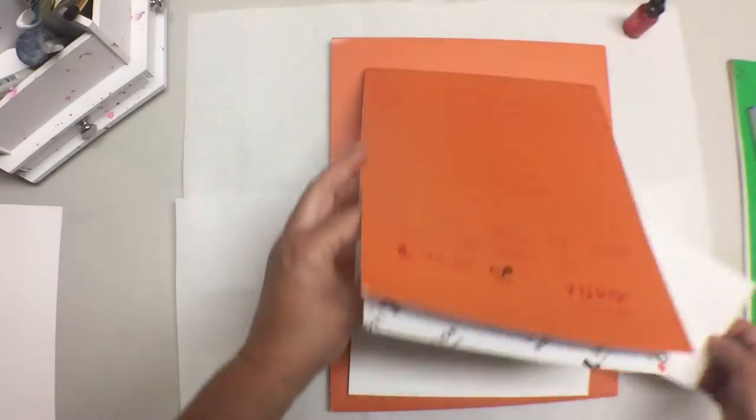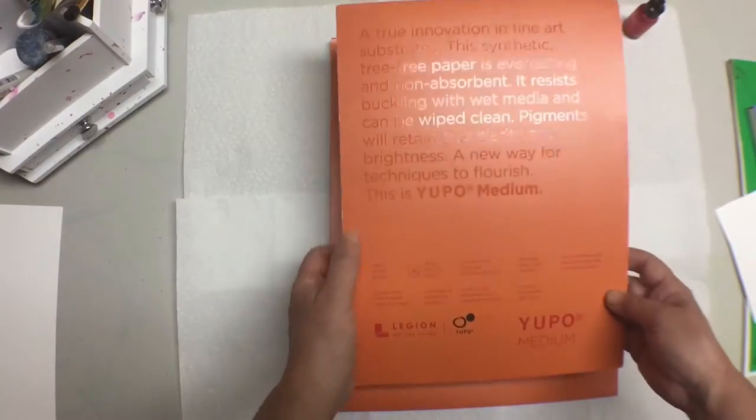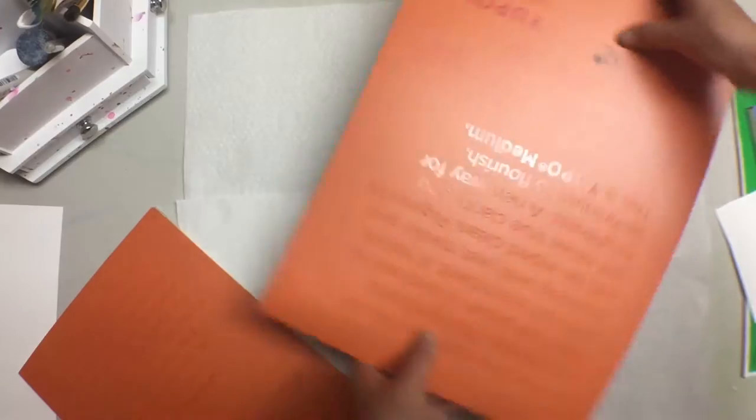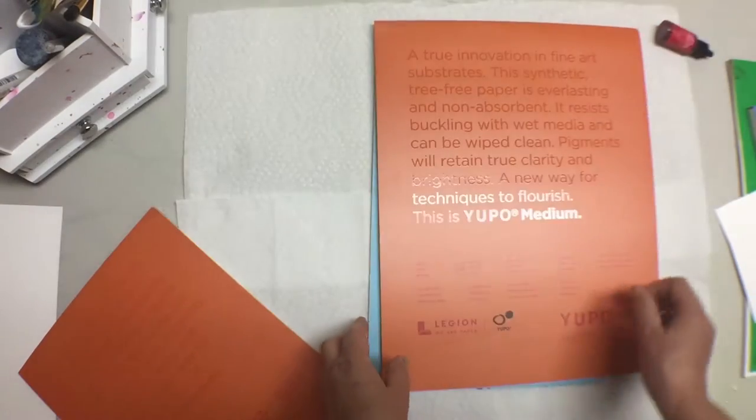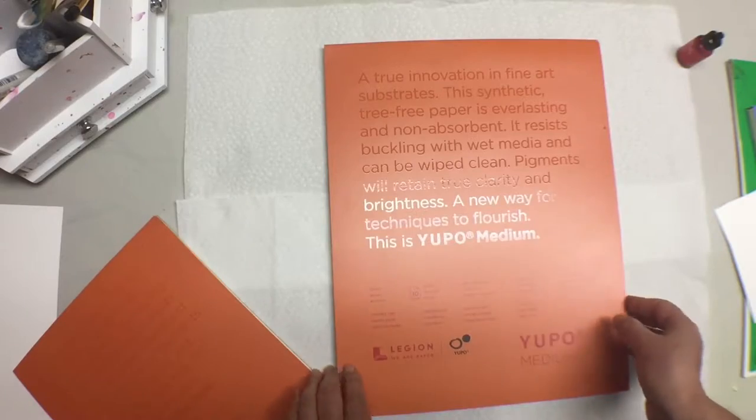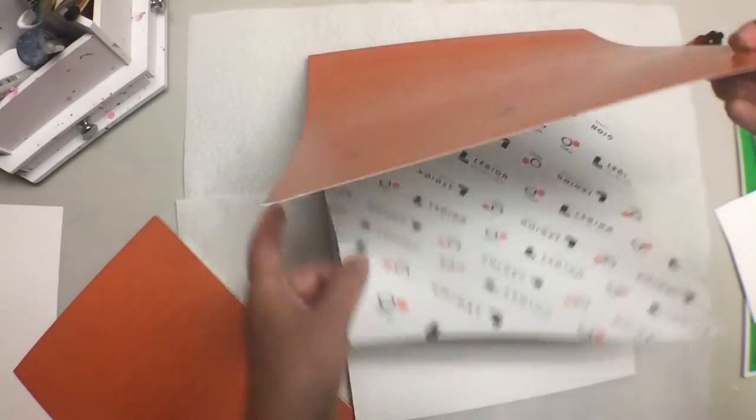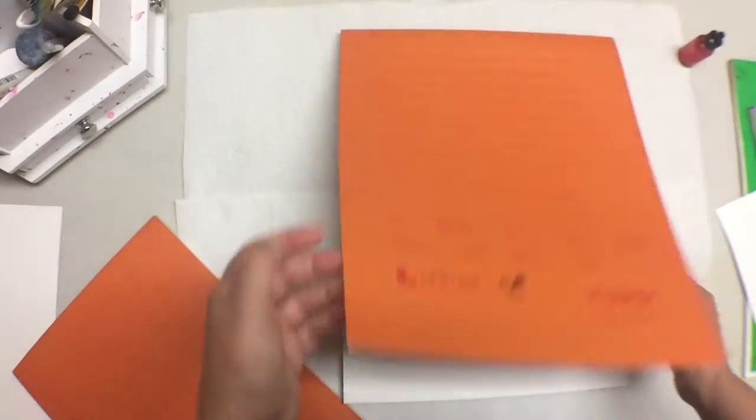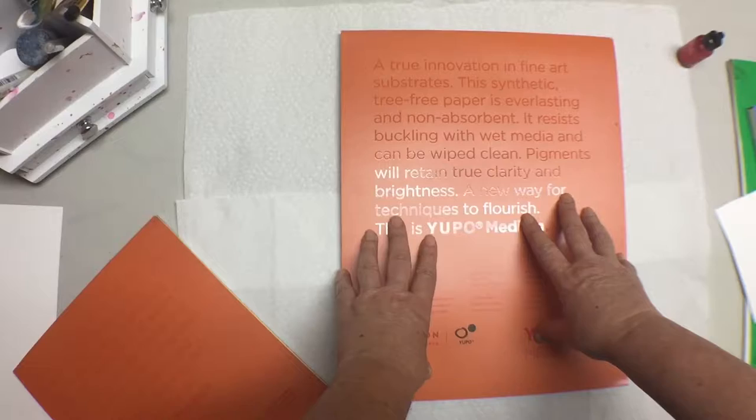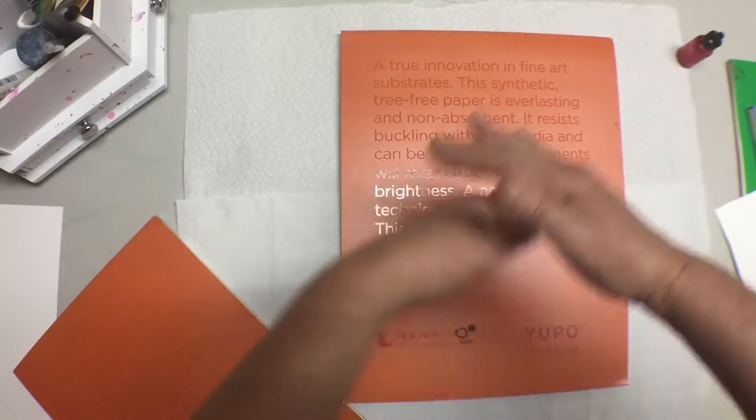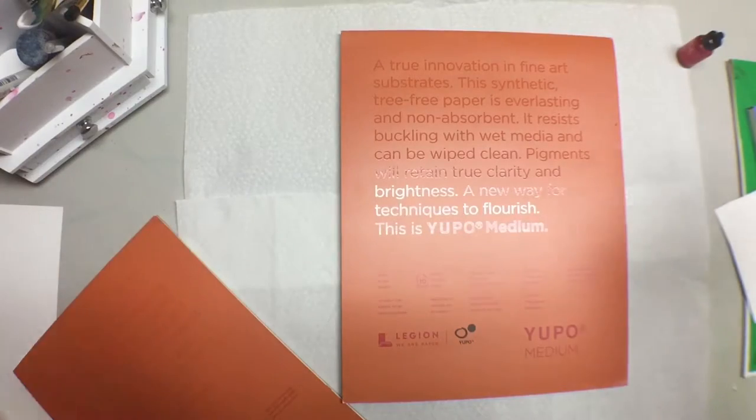It comes in many different sizes. The most common are the 8x10. This is the 11x14. Very often when I'm doing classes and I want to just give them smaller pieces I end up cutting these in four and then it comes about a 5x7 so it's much more cost effective to use this cut up. They also have these in very large sizes. You can buy them separately.